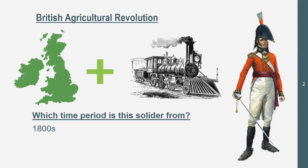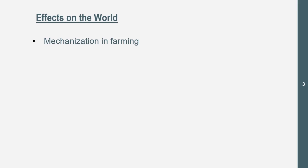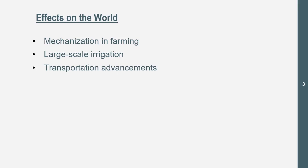Now let's get into the effects of this agricultural revolution. We're not going to get into much depth about it, but if you want a definition, it's where agriculture became easier and better. The first effect is mechanization in farming — farming involved a lot more mechanization. There was also large-scale irrigation as an effect of this agricultural revolution. They needed more water to the people and the crops. Transportation advancements were also key.